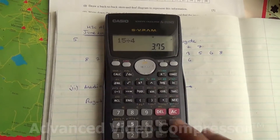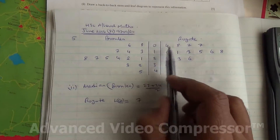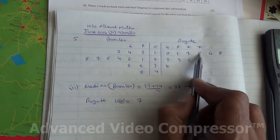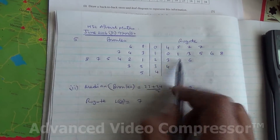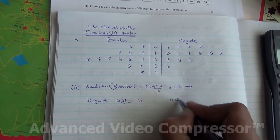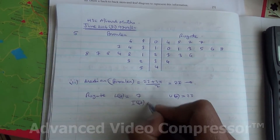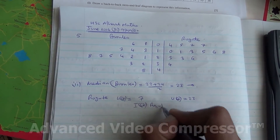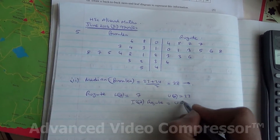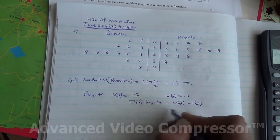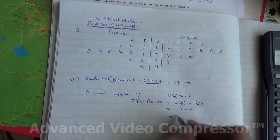The upper quartile is at position (3/4) × 15 = 11.25, which falls between positions 11 and 12. Both values are 23, so (23 + 23) ÷ 2 = 23. The upper quartile is 23. Therefore, the interquartile range for Bromley is 23 − 7 = 16.